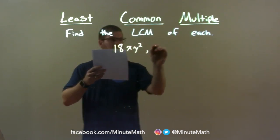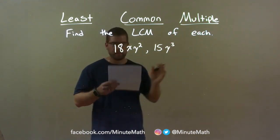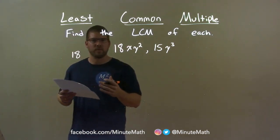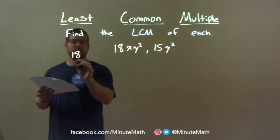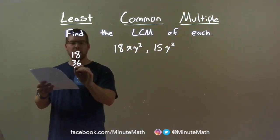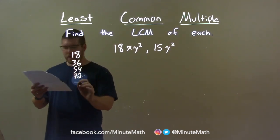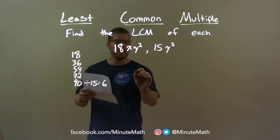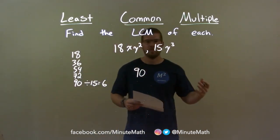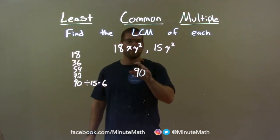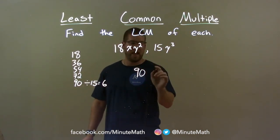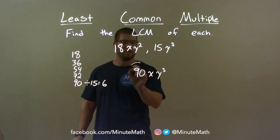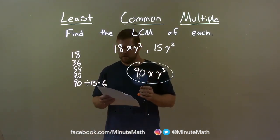18xy squared and 15y to the third power. First thing I deal with is the numbers themselves — 18 and 15. I take 18 and find its multiples to find the smallest one divisible by 15. 18, 36, 54, 72 are not divisible by 15, but 90 is — 90 divided by 15 is 6. So 90 is our number. Now for the variables: we have one x here and no x there, but we must have an x. We have two y's here and three y's there, so we need at least three y's — y to the third power. Our final answer is 90xy to the third power.